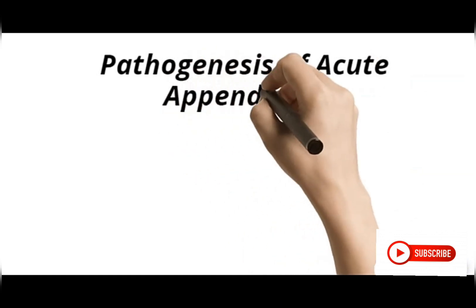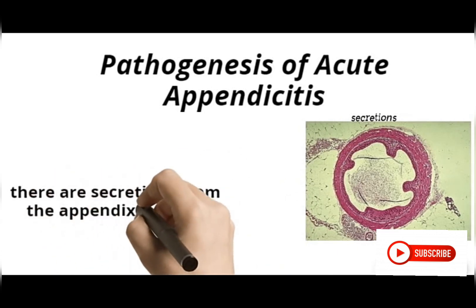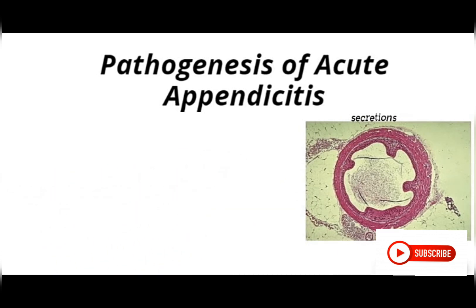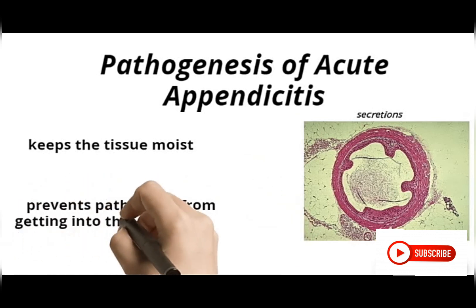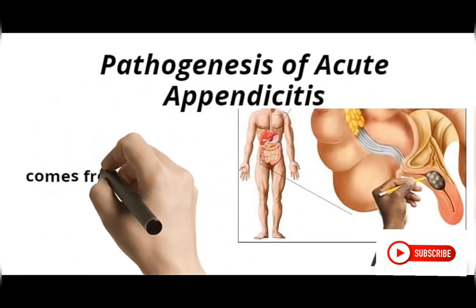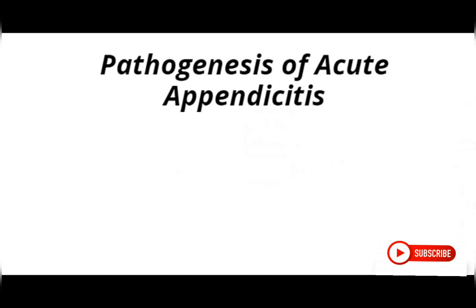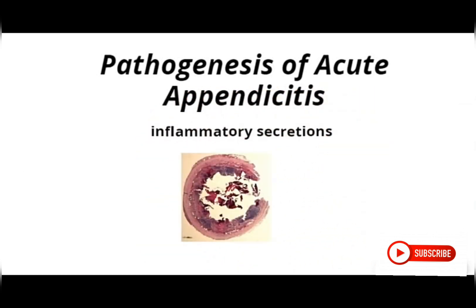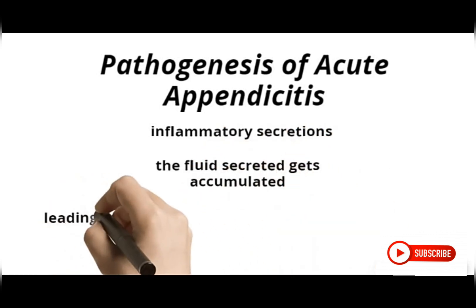Regarding the pathophysiology of acute appendicitis: in a normal healthy person, secretions from the appendiceal mucosa keep the tissue moist and help prevent pathogens from entering the bloodstream. When obstruction occurs in the appendiceal lumen, inflammatory mediators such as cytokines and histamines are secreted, and fluid secreted by the appendiceal lumen accumulates, increasing pressure within the lumen.